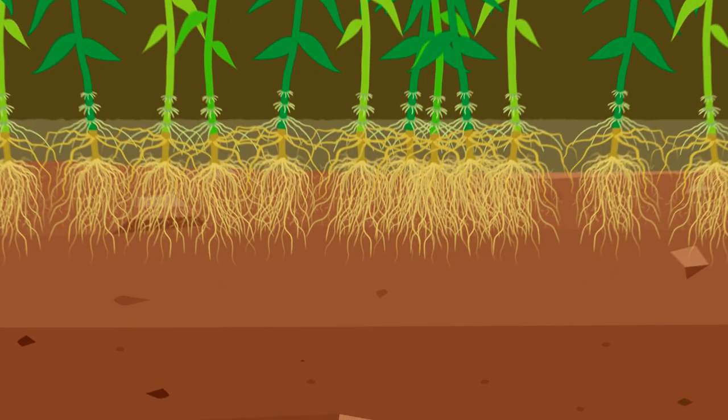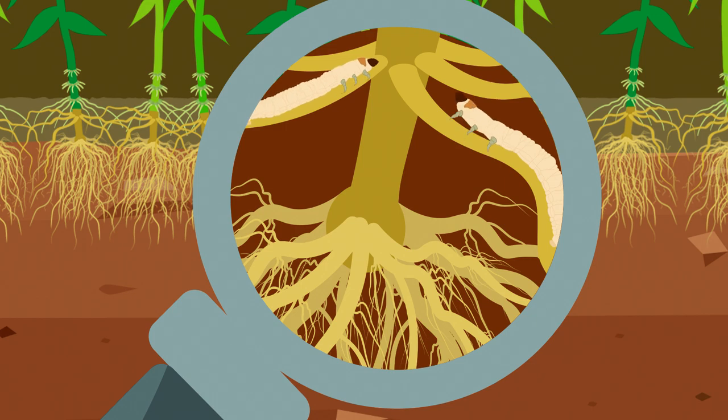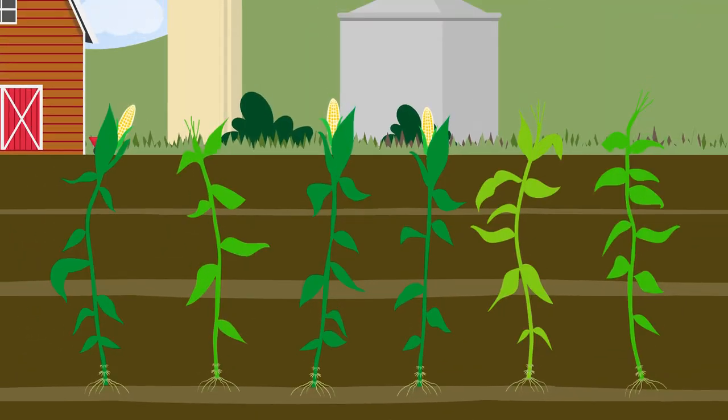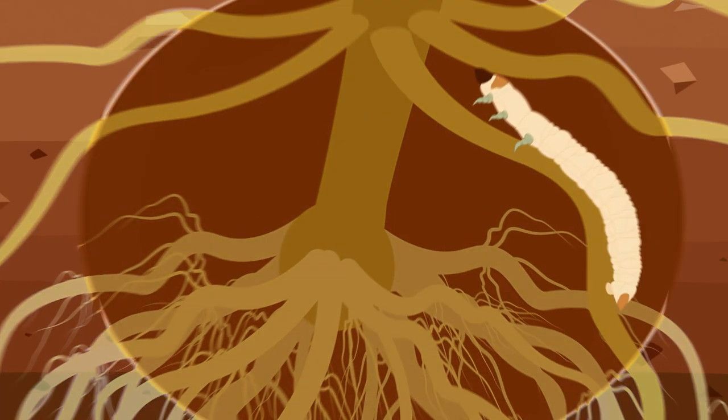The western corn rootworm is among the most damaging maize pests on the planet. The rootworm larvae feed on the crown and brace roots of maize plants and thereby reduce their growth. But how do the larvae locate these roots in the dark?